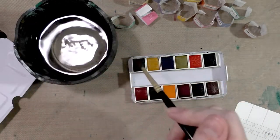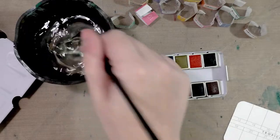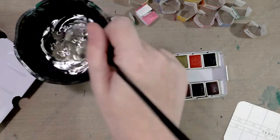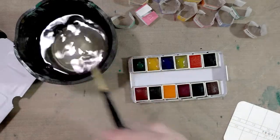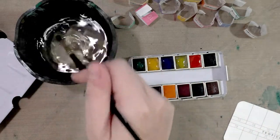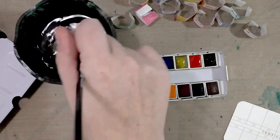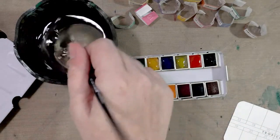The first thing you're going to want to do is activate the pan. You put a dab of water on each pan and give it a few seconds to a minute to soak in. You're going to get a much more accurate color response.